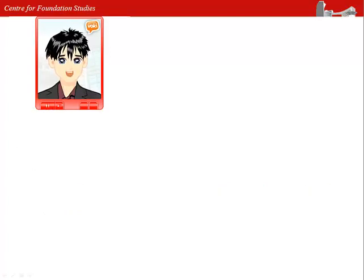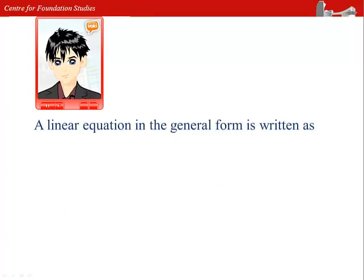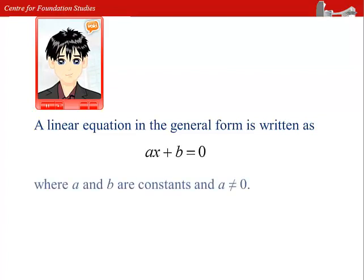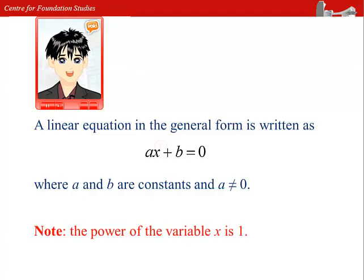A linear equation is an equation for a straight line. It is usually written in the form of ax plus b equals to zero, where a and b are constants, and the value of a is not equal to zero. Note that the power of the variable x is 1.